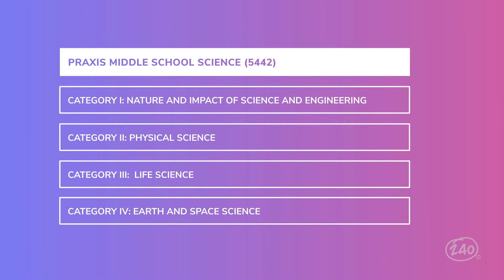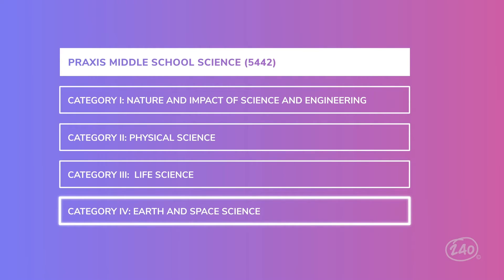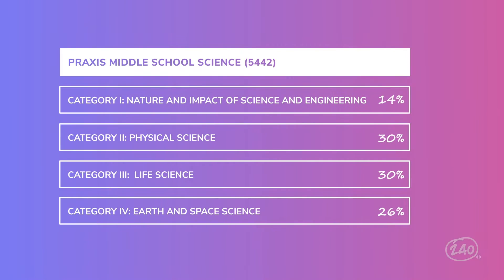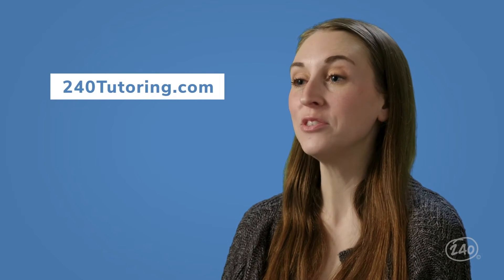The Praxis Middle School Science Subtest consists of four overarching categories: nature and impact of science and engineering, physical science, life science, and earth and space science. They each make up a specific percentage of your test. You'll see the most physical and life science, followed by earth and space, and finally the nature of science. We're going to cover a little bit of all four categories in this video, though we're only scratching the surface. The 240 Tutoring Study Guide has everything you need. Let's tackle these in order of importance.